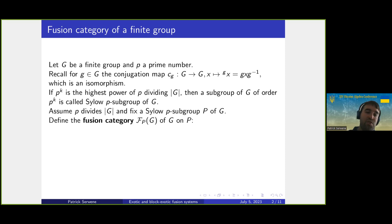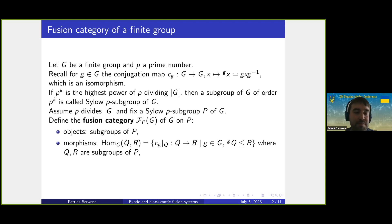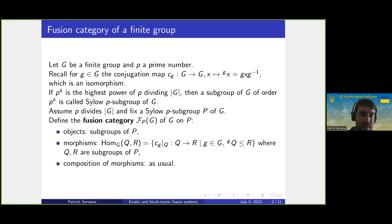We define the fusion category F_P(G) by saying the objects are the subgroups of P. The morphisms are exactly those conjugation maps where they are well defined: for two subgroups Q and R of P, we take the conjugation map restricted to Q mapping to R, where g is any element of G such that g acts on Q and maps it into R. Composition of morphisms is just the usual composition of group homomorphisms.